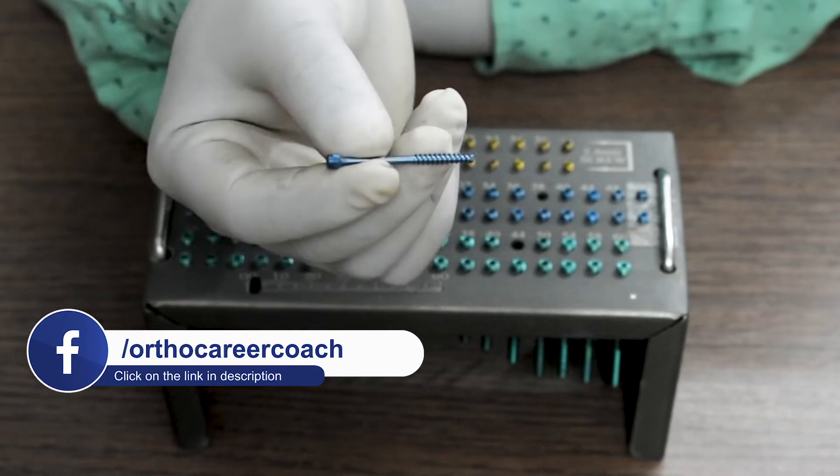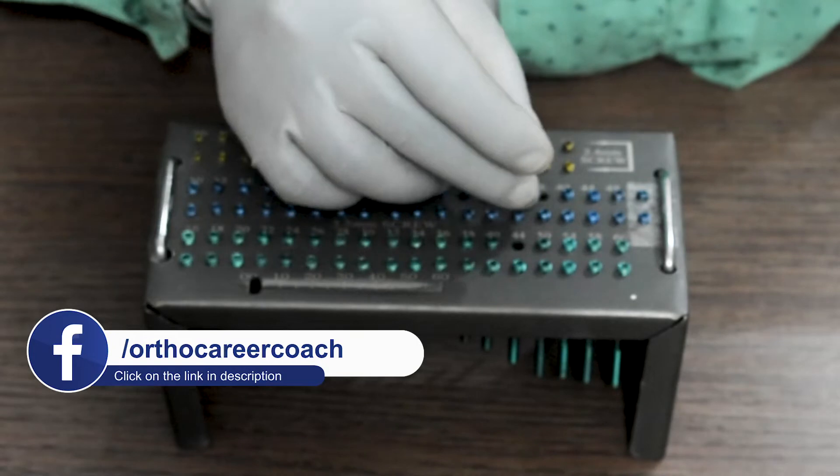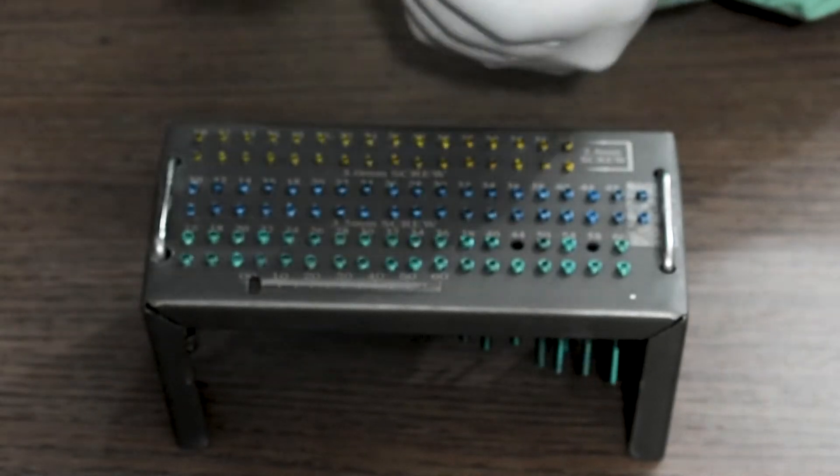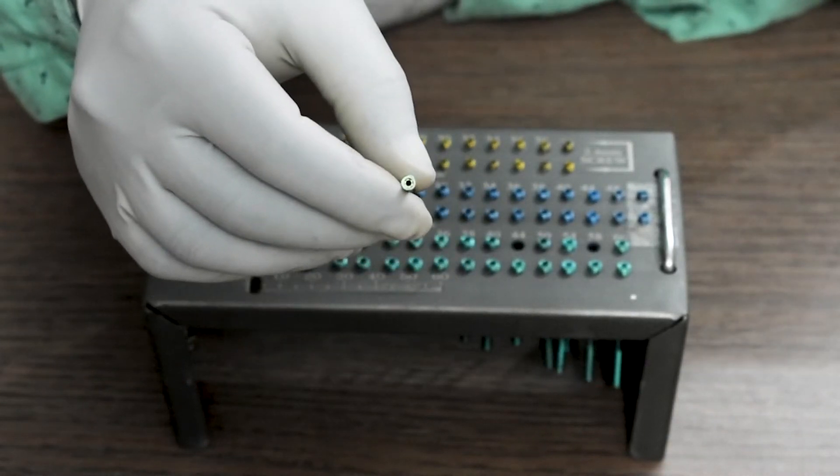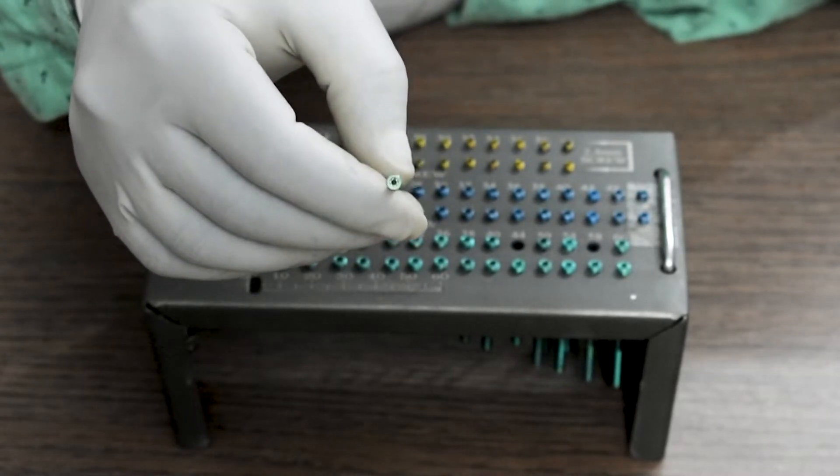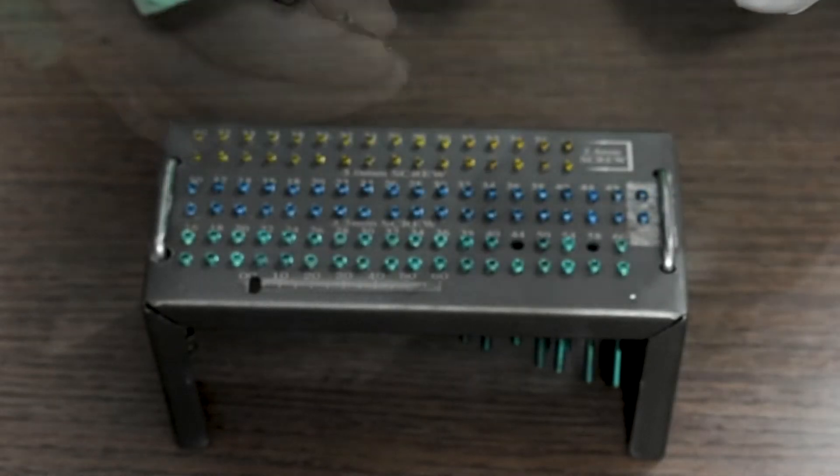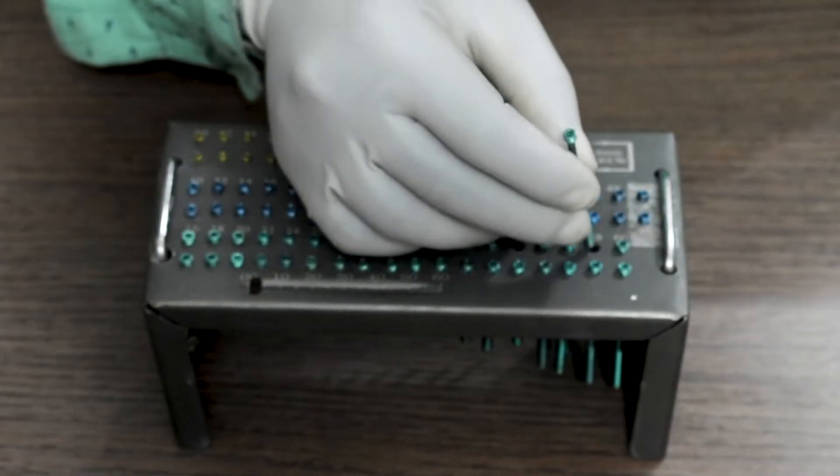This one is a 3mm Special Herbert Screw, it is also cannulated. And this one is 3.5mm Special Herbert Screw, again cannulated. It is called a headless screw because it completely goes in the bone along with the head.